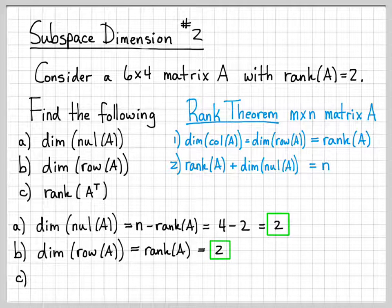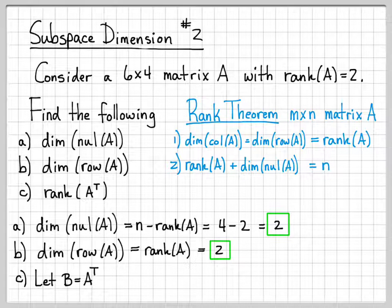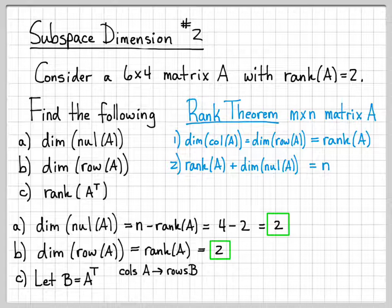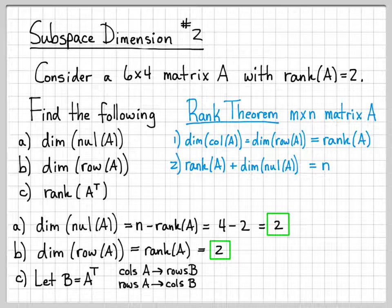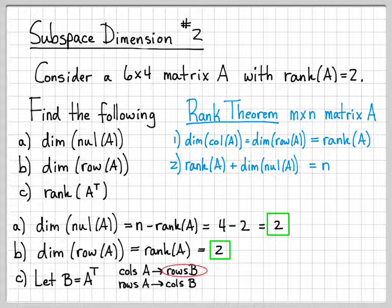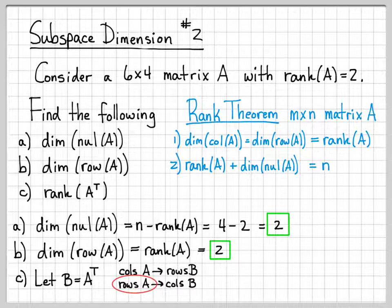And finally, the last one, kind of the trickiest one, but really not that tricky. What is the rank of the transpose of A? So let's think of this matrix B as A transpose. So I would like to know what the rank of B is. Think about what the transpose operation does. The transpose flip-flops the matrix, so to speak. The columns of A turn into the rows of B, and the rows of A turn into the columns of B. So what used to be column properties of the matrix are now row properties of the matrix, and what used to be row properties of the matrix are now column properties of the matrix.